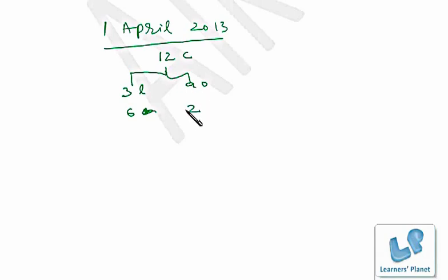So 6 plus 2 equals 8, that means 1 odd day finally. Now we have to reach till 1st April 2013. January has 31 days, so 3 odd days. February 28 is 0 odd days.